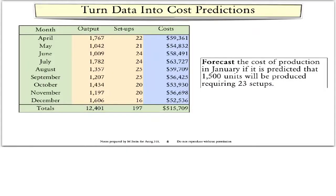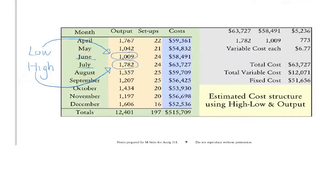One problem here is that we have two independent variables — output and setups — and one dependent variable, cost. For the high-low method, we can only use one independent variable, so we will use output and ignore setups. We choose the high output, July, and the low output, June.